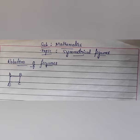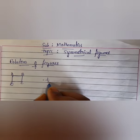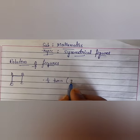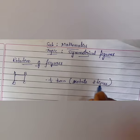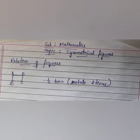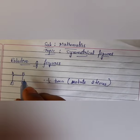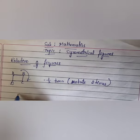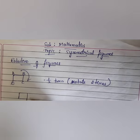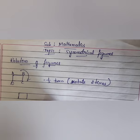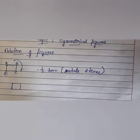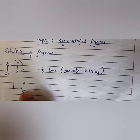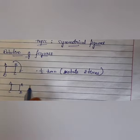A quarter turn means a 1/4 turn. 3/4 means a three-quarter turn. A 1/2 turn means rotating two times. When we rotate this square, it becomes a 1/4 turn. Observe the figure: A, B, C, D — this is a 1/4 turn.